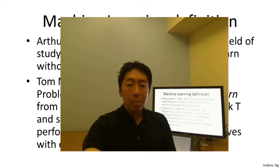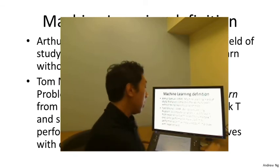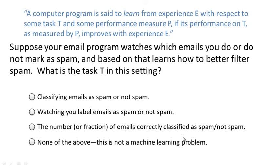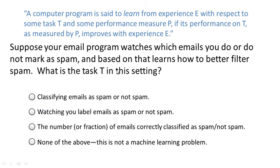Throughout these videos, I'll occasionally ask you a question to make sure you understand the content. Here's one. On top is the definition of machine learning by Tom Mitchell. Let's say your email program watches which emails you do or do not flag as spam. In an email client, you might click the spam button to report some email as spam, but not other emails. Based on which emails you mark as spam, your email program learns better how to filter spam email. What is the task T in this setting?